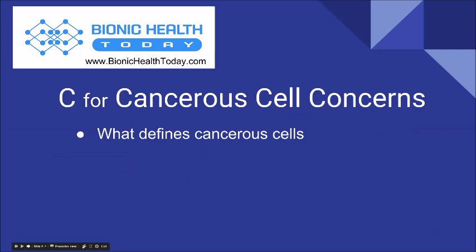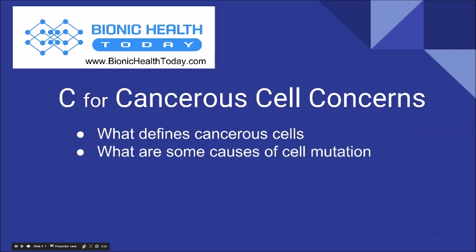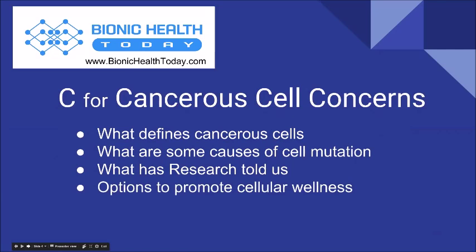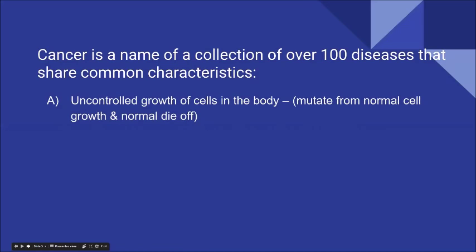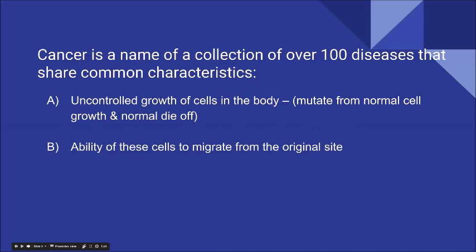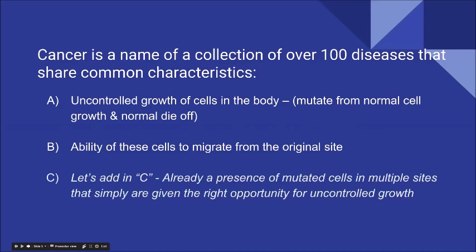So what defines cancerous cells? Cancer is a name for a collection of over 100 diseases that share common characteristics: uncontrolled growth of cells in the body that mutate from normal cell growth and normal die-off; the ability of these cells to migrate from the original site; and the presence of mutated cells in multiple sites that are given the right opportunity for uncontrolled growth.